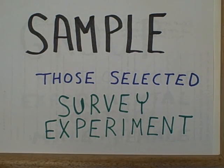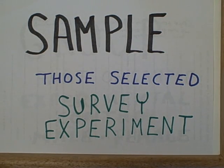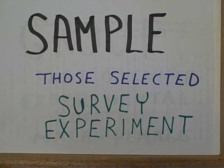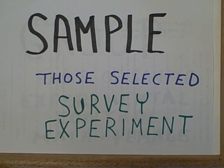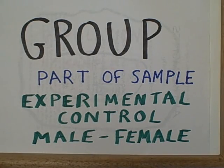A sample concerns those specific subjects that we actually observed. When we do a case study, the sample is one — one particular person that we're taking a look at. If we're doing a survey, the people actually filling out the questionnaires that are finally accepted for data analysis would represent our sample. If we're doing an experiment, those people who are actually being randomly assigned to the different groups would constitute our sample. So the sample is those subjects actually selected from the population for the specific observation — those subjects about whom we have the data that we are going to analyze.